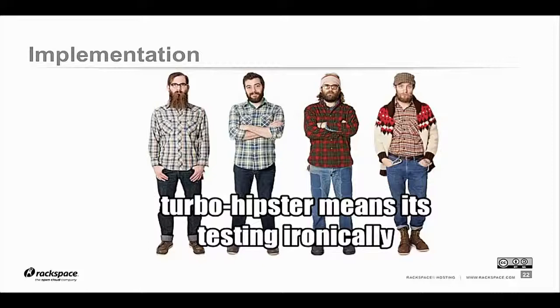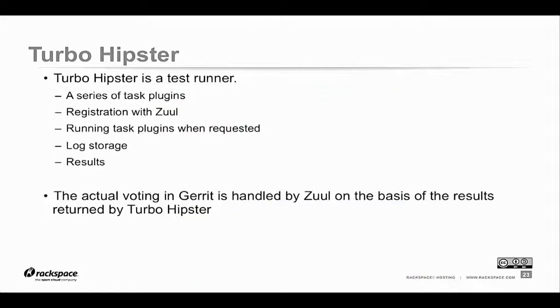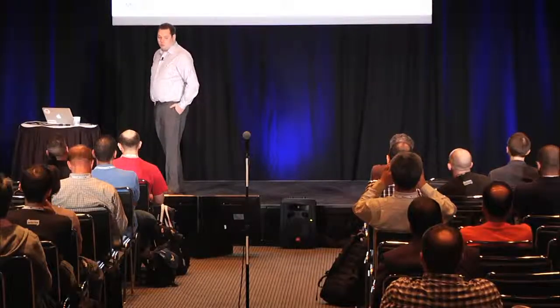Let's look at TurboHipster. The name was actually kind of random but it stuck. What is TurboHipster? It's a test runner or job runner. It has a series of plugins, so the plugins know how to run different jobs. It will register with Zuul saying it knows how to run the database job or even the PEP8 jobs. When it receives a job from Zuul, it runs the task needed in the plugin, uploads the logs to Swift or via SCP or copies on disk, and returns results. TurboHipster actually sends the results back to Zuul, and Zuul collates this for every single job requested — Zuul is what reports back to Gerrit.